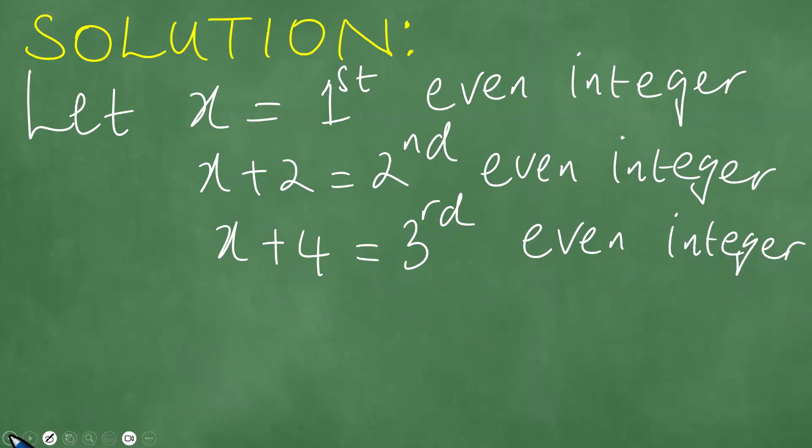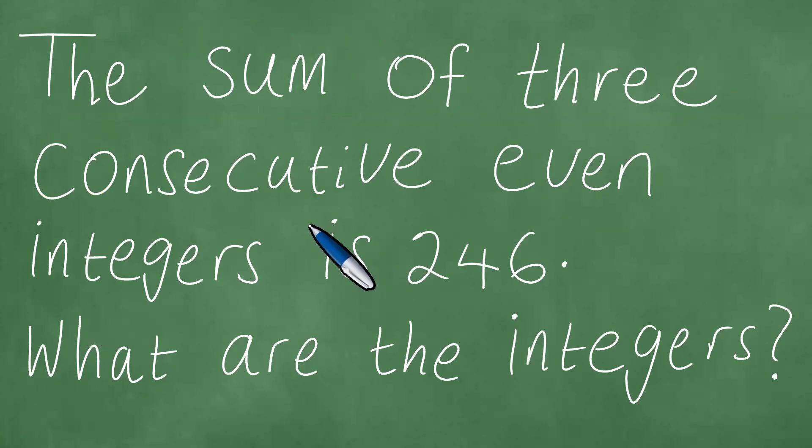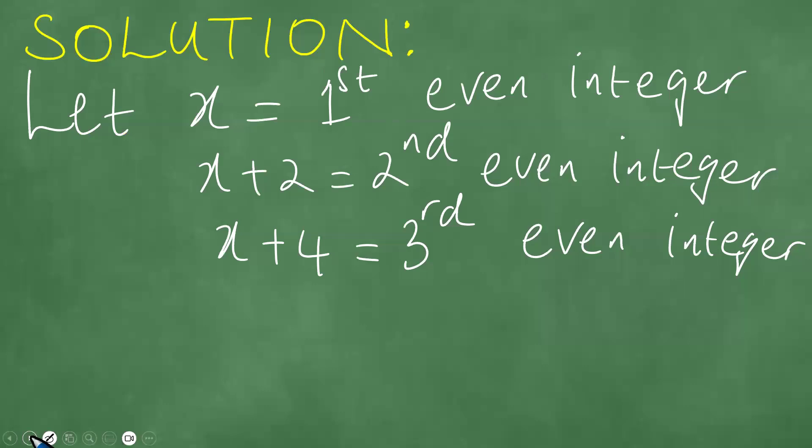So we continue to then say the sum of the three consecutive even integers is 246. So now we find the sum. The sum is the result of the addition. So it's x plus x plus 2, and we also have x plus 4. So we add x, we add the x plus 2 for the second one, and we add x plus 4 for the next one.